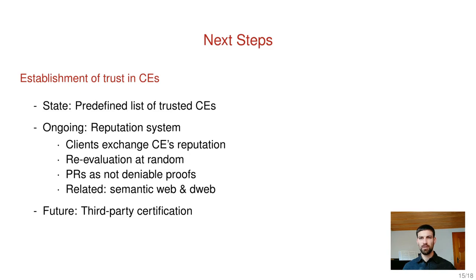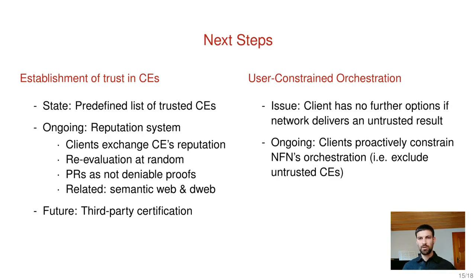We found that related work exists in the field of semantic web and that the decentralized web community is facing similar issues. For future work, another approach is where third parties trusted by clients do certification of computing entities. As a second point, I want to focus on user-constrained orchestration. In our current system it is an issue that if the network delivers an untrusted result to a client, the client has no further options. That is why it is ongoing work to allow clients to proactively constrain NFN's orchestration process, which means excluding untrusted compute entities in advance.